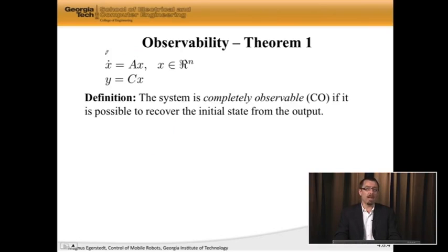So observability in general means that the system is completely observable, which I'm going to call CO, if it is possible to recover the initial state from the output. That's basically what it means. I collect enough outputs, and from there, I'm able to tell you where the system started.